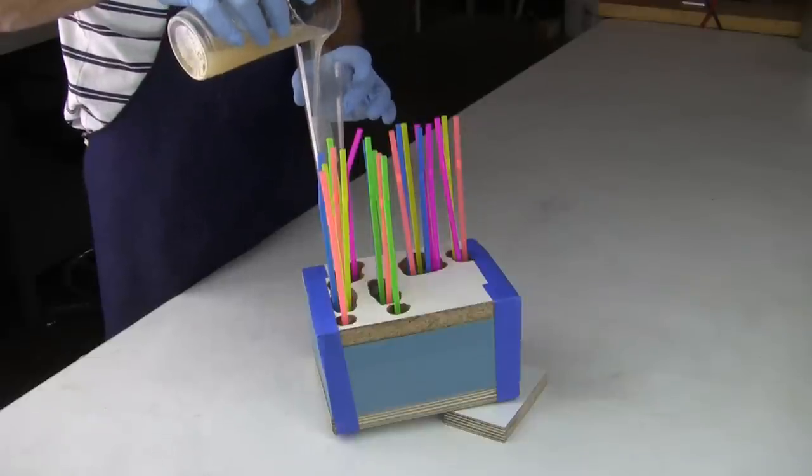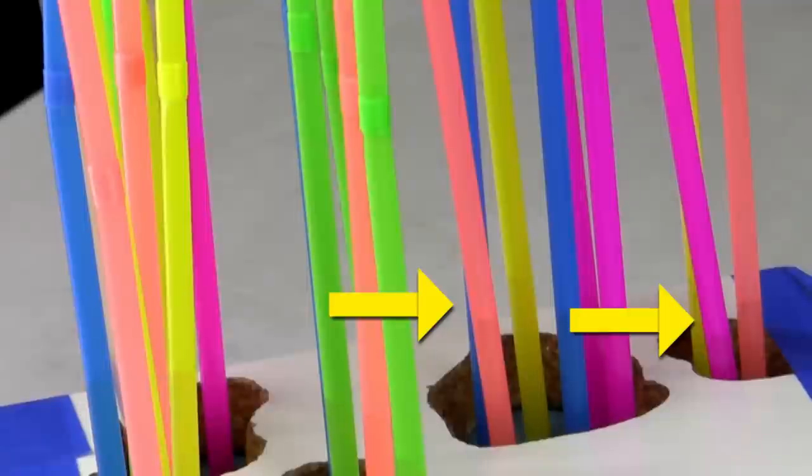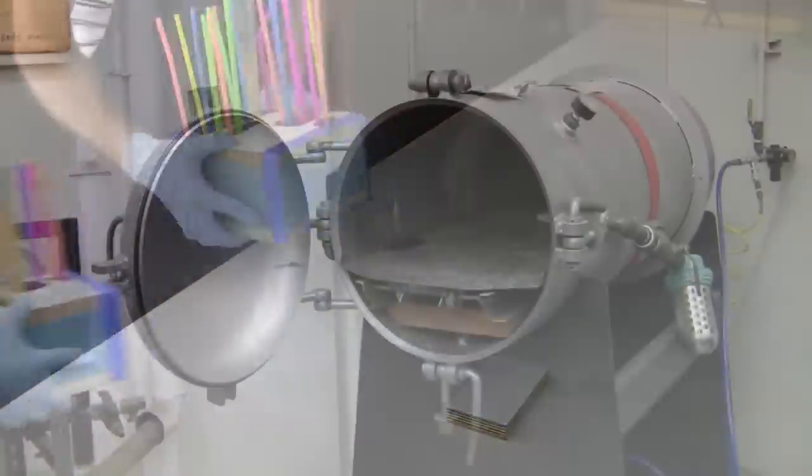The urethane is carefully poured into our funnel and flows through the mold. You can see the material starting to flow out the vent risers, meaning the cavity is being filled.